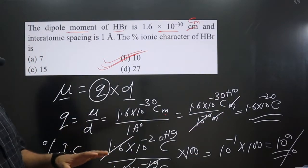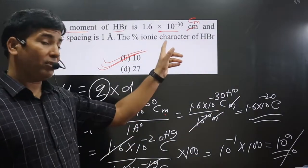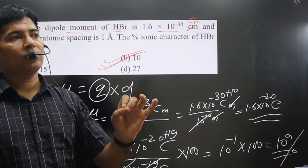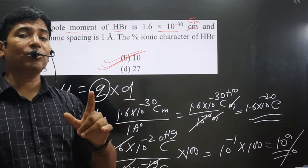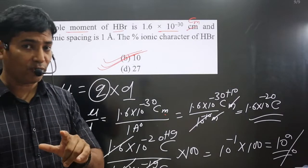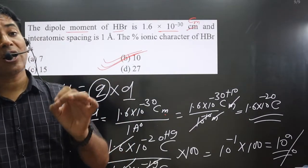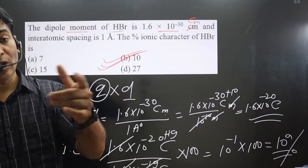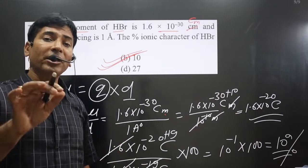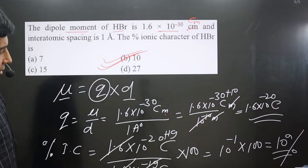In these kinds of questions, you should be careful about the unit. Remember the formula: mu is equal to Q into D. From here, you can calculate the charge Q value. Then apply percentage ionic character equals the charge value you calculated divided by the charge of the electron, multiplied by 100, and then you can get the answer.